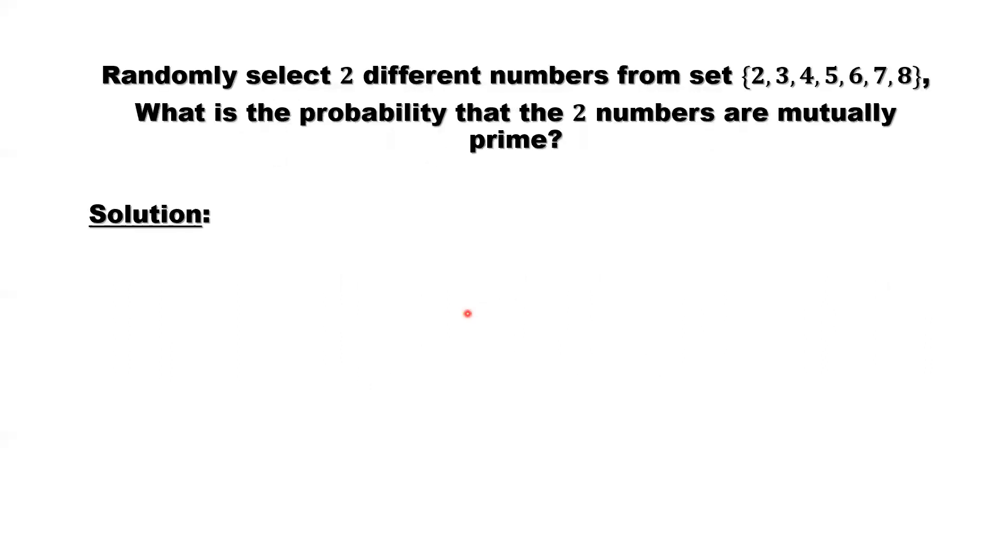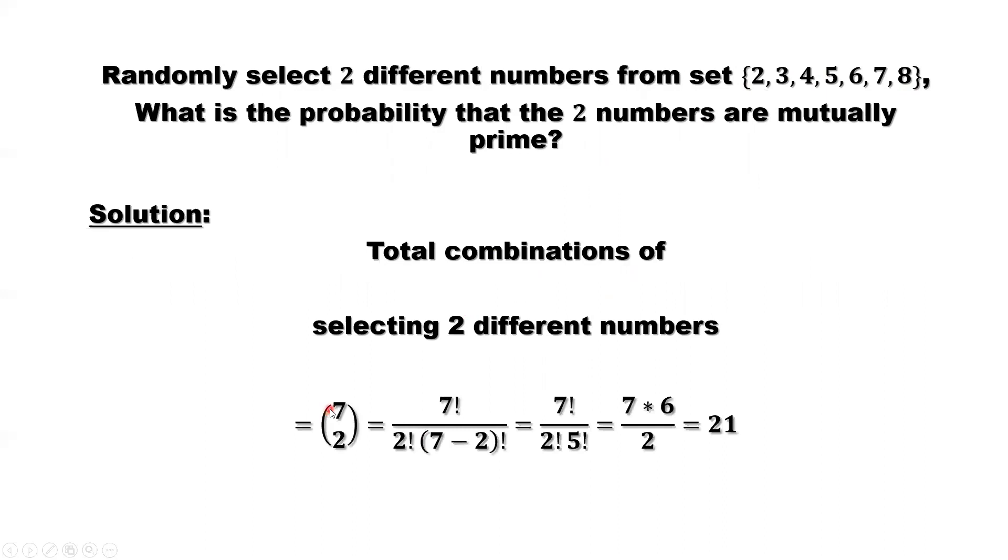First of all, we need to calculate the total number of possibilities from those seven numbers. Pick two different numbers. That's a combination. So this from seven, pick two. That's a combination number. We can calculate this using the formula. Simplify. We find that this total number should be 21. We have 21 ways to select two different numbers from this set.